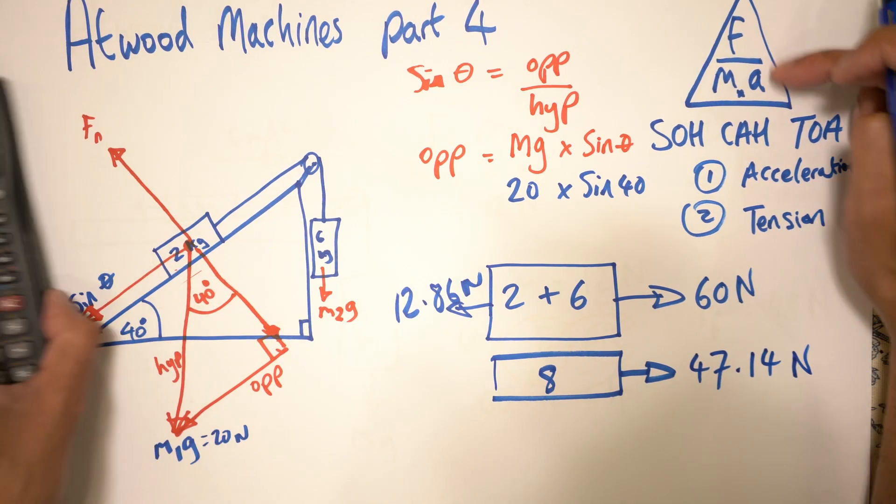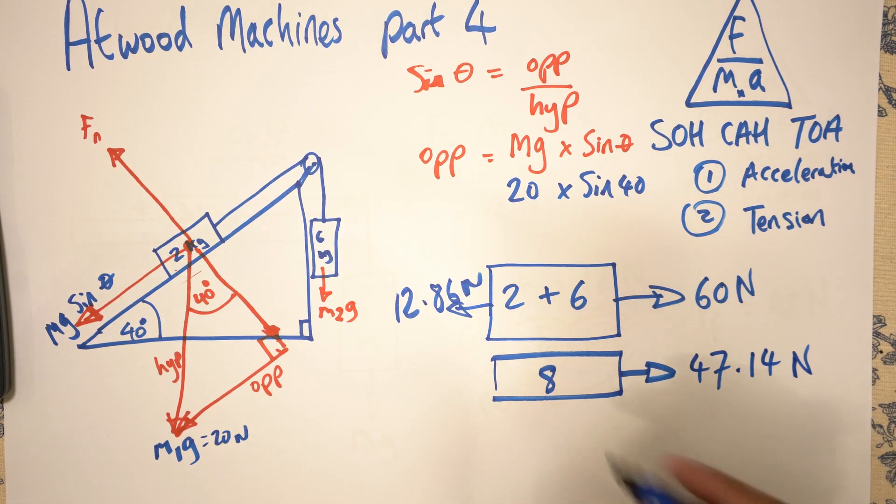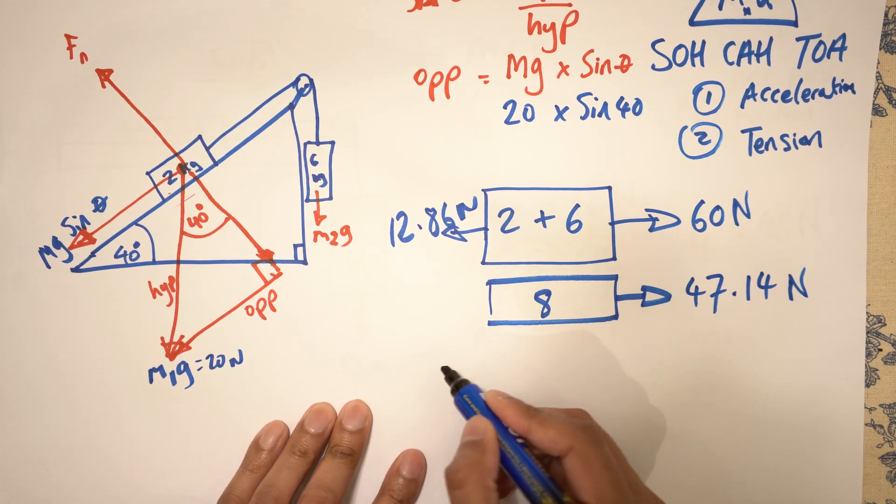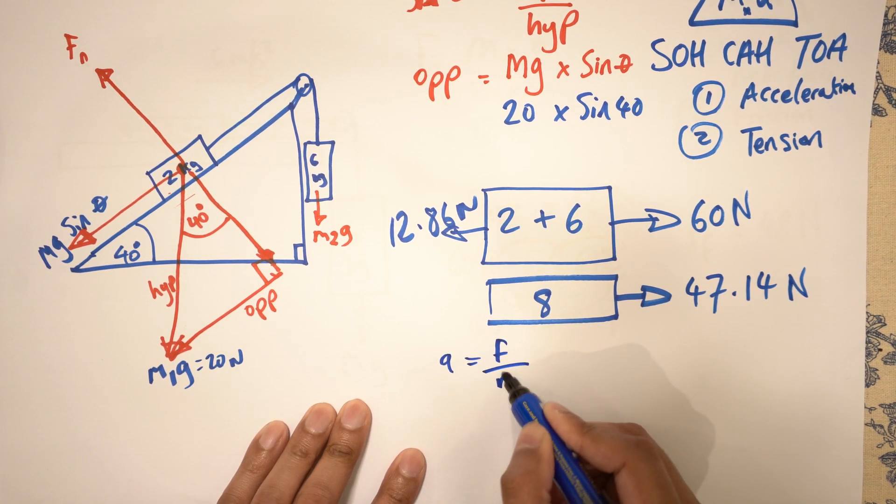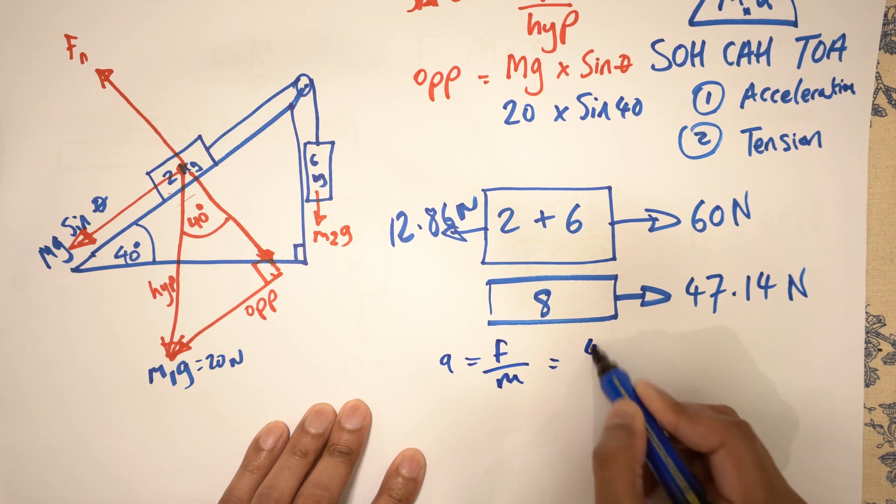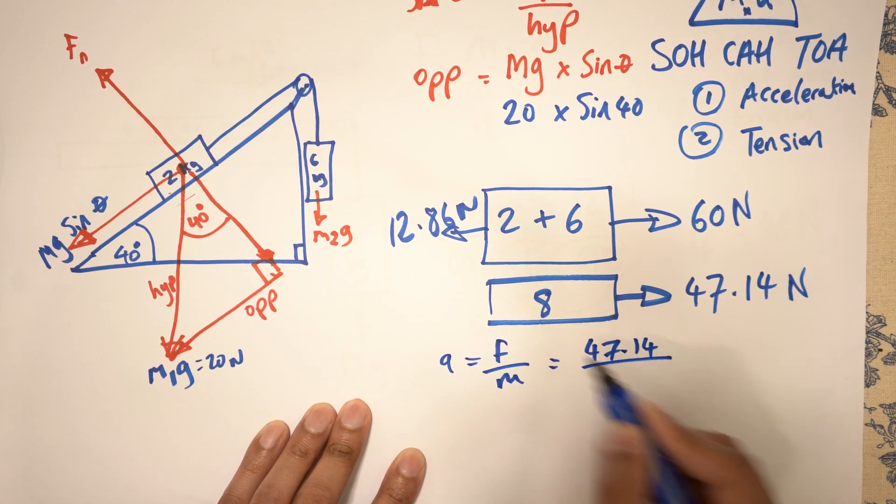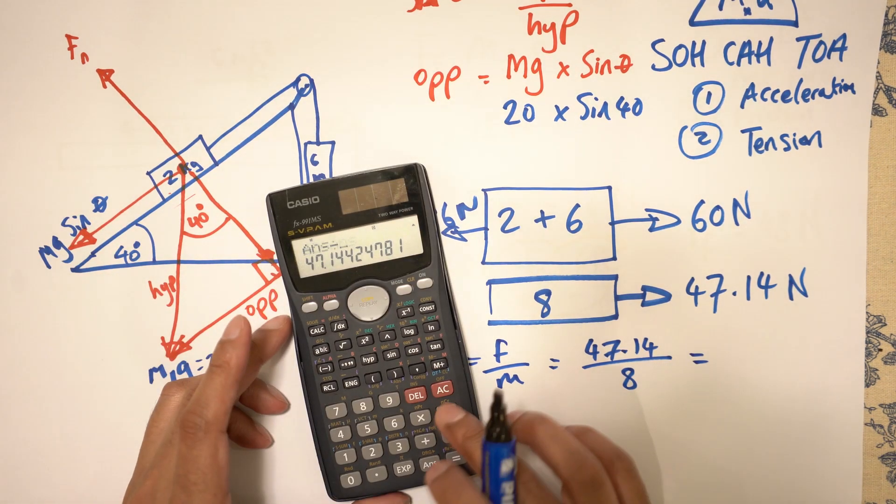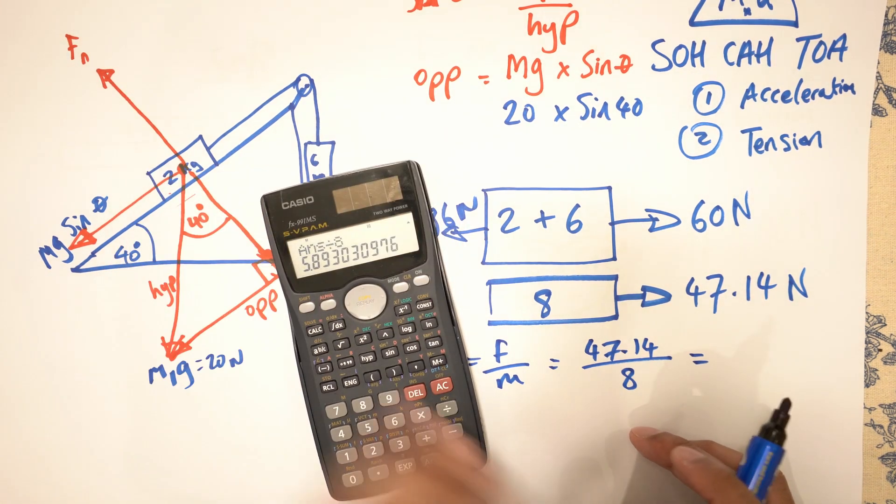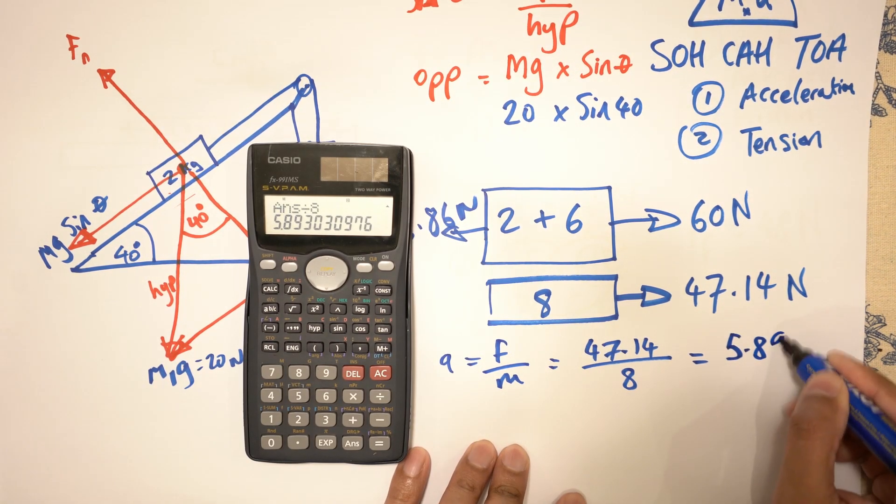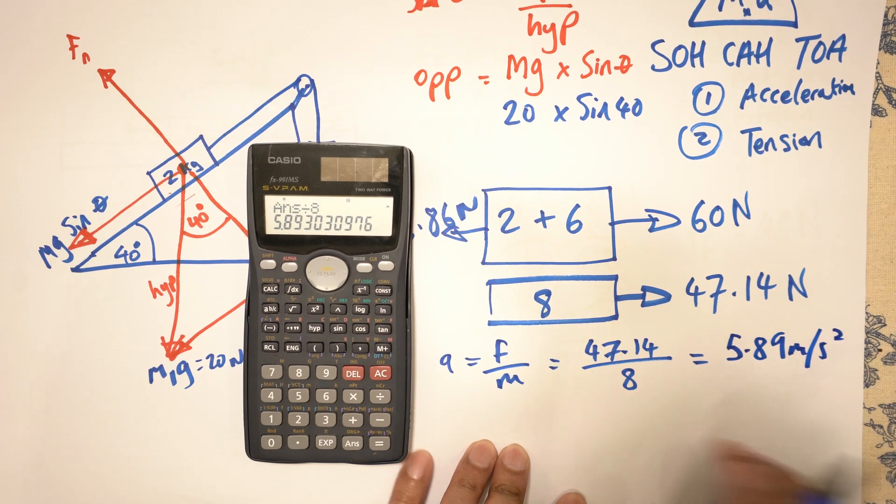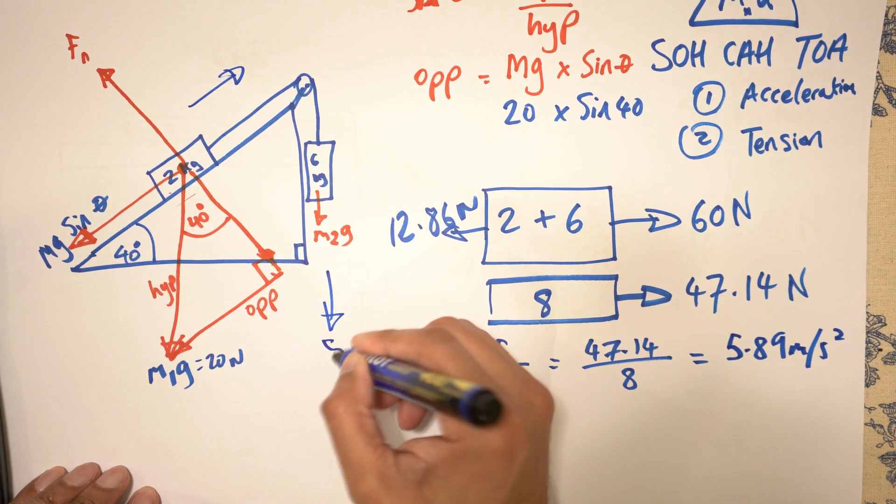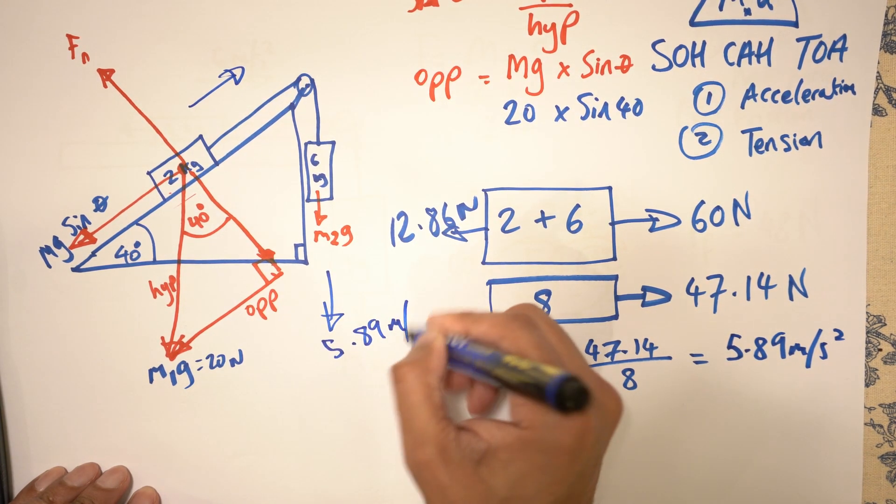And then it's simply acceleration is F divided by M. So let's just push this up a little bit. So acceleration is F divided by M. The net force is 47.14 divided by the mass, which is 8, which gives us 5.89 meters per second squared. So that's accelerating in that direction. And down here, 5.89 meters per second squared.